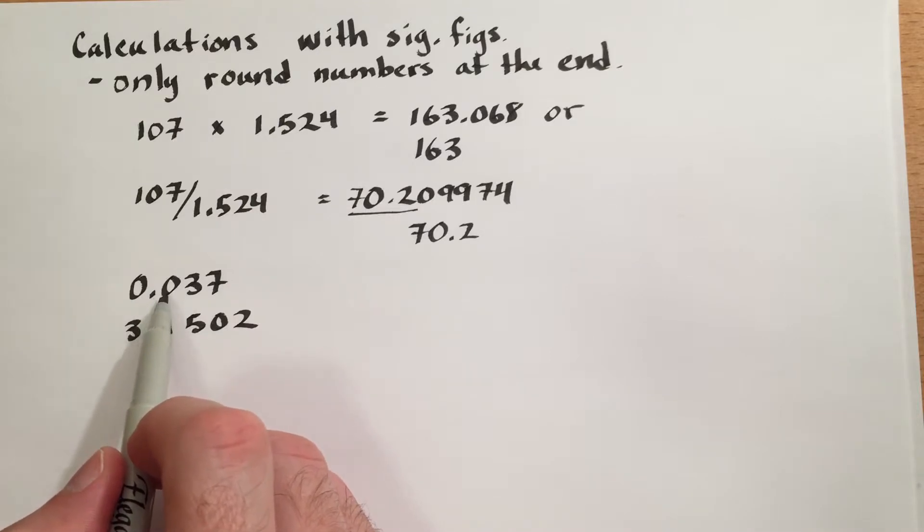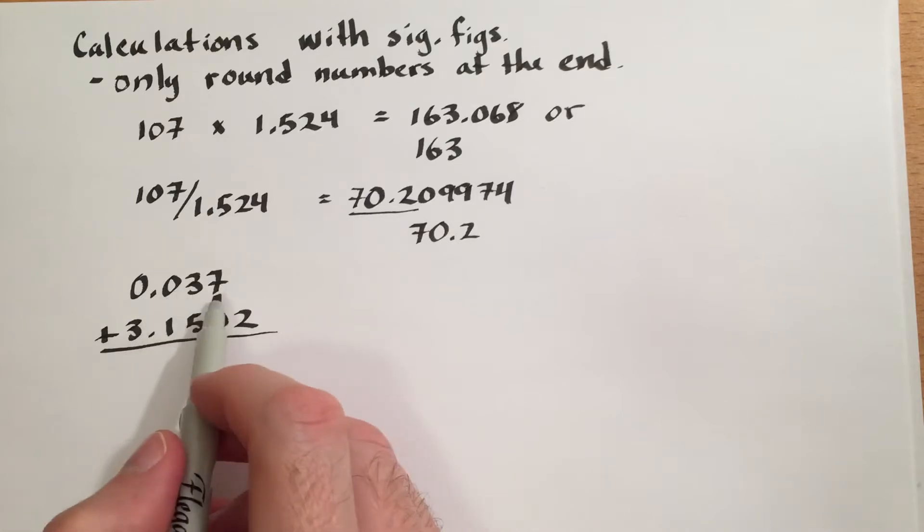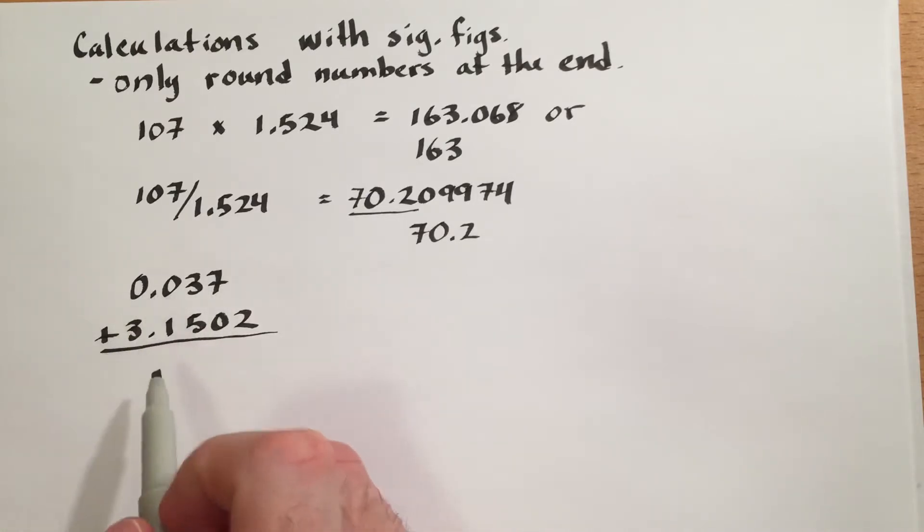The first number only has 2 significant digits, because leading zeros are not significant. However, there are 3 decimal places. Our second number has 4 decimal places and 5 significant figures overall.